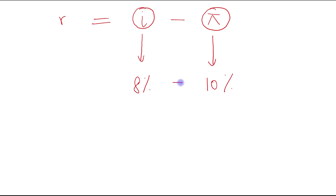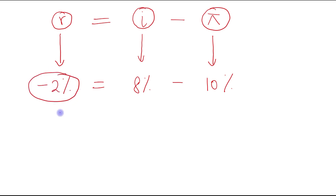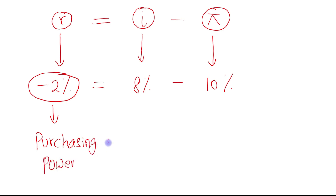So your purchasing power, or in real terms the interest rate that you will get, will be minus two percent. Minus two percent means that your purchasing power has been reduced by two percent. I hope the concept is clear to you. Thank you.